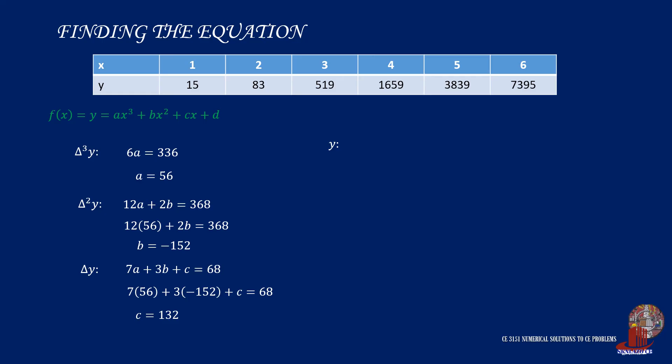Take an equation from Y, and in this example, let's use A plus B plus C plus D is equal to 15. By substituting A, B, and C, the value of D is then solved as negative 21. Finally, we have the polynomial for the data set as 56X cubed minus 152X squared plus 132X less 21.